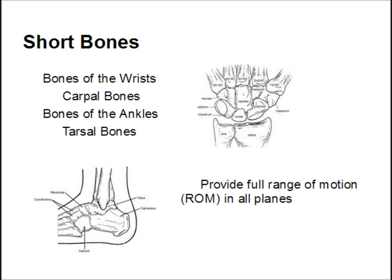The next type of bones are called short bones. These are more cubical or round. They include the carpal bones, or bones of the wrist, and the tarsal bones, or bones of the ankle. They provide full range of motion in all planes.